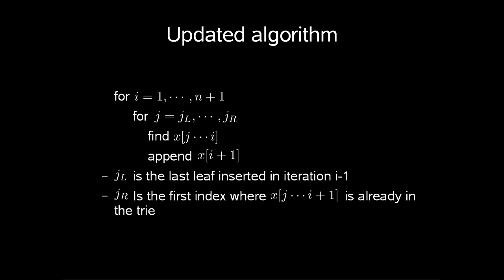But how do we actually find jl and jr? Well, jl in iteration i is the last leaf inserted in iteration i-1, because all smaller indices are already leaves. jr in iteration i is the first index where x[j..j+1] is already in the tree. Hence, all larger indices are already in the tree.